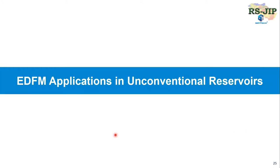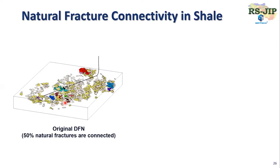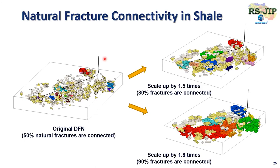That is the first big part for applications in conventional reservoirs. Next, I show applications in unconventional reservoirs. The first application is about natural fracture connectivity in a horizontal well. The geology people provide a beautiful 3D natural fracture, and after connectivity analysis, we found only about 50% connected and 50% not connected. So we developed another feature where we can scale up the fracture size. For example, if we increase the natural fracture size by 1.5 times, 80% of fractures will be connected. If we increase it to 1.8 times, about 90% of fractures will be connected.